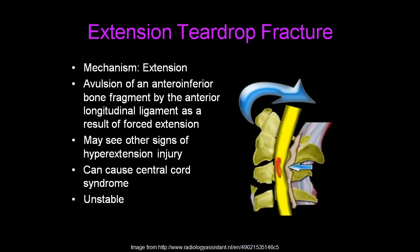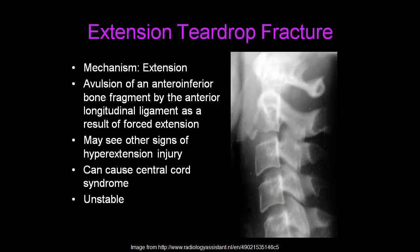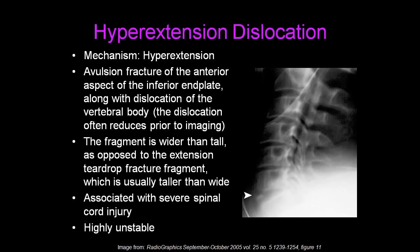The extension teardrop fracture can cause central cord syndrome. Here is an example on the right of a radiograph in a patient with an extension teardrop fracture. Hyperextension dislocation is a highly unstable injury that occurs with hyperextension. It is an avulsion fracture of the anterior aspect of the inferior end plate, along with dislocation of the vertebral body. However, the dislocation is not seen on imaging because it usually reduces prior to imaging. The fragment is often wider than it is tall — as opposed to the extension teardrop fracture fragment, which is usually taller than wide. It is associated with severe spinal cord injury and requires CT and/or MRI.